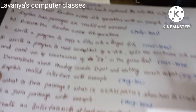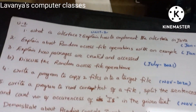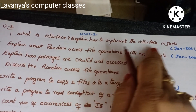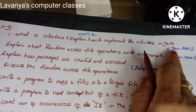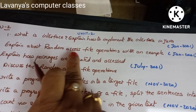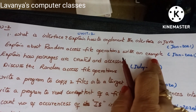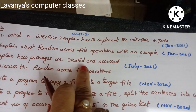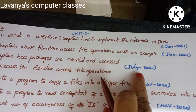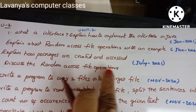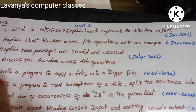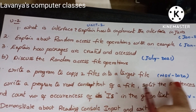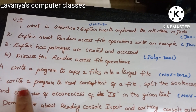Now unit two questions: 'What is an interface? Explain how to implement an interface in Java' — from January 2021. 'Explain about random access file operations with an example' — January 2021. 'Explain how packages are created and accessed' — July 2021. 'Discuss the random access file operations' and 'Write a program to copy two files into a target file' — November 2020.